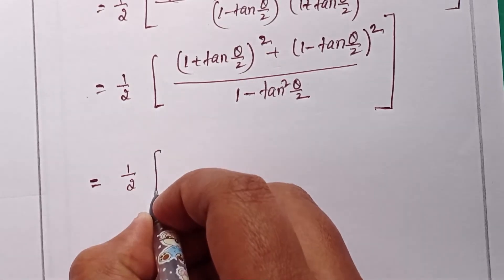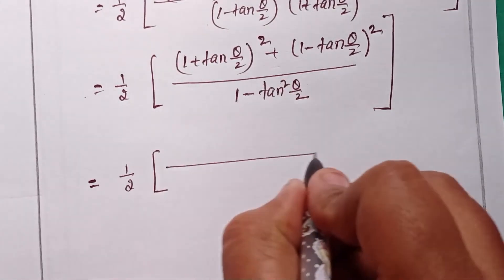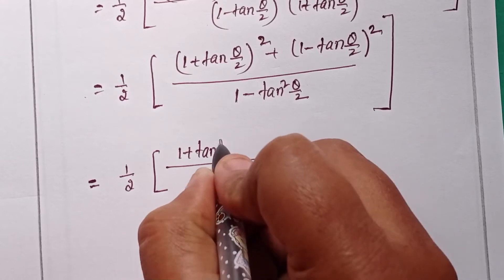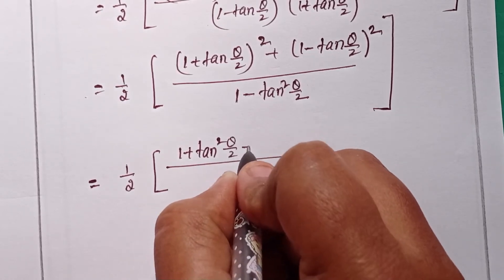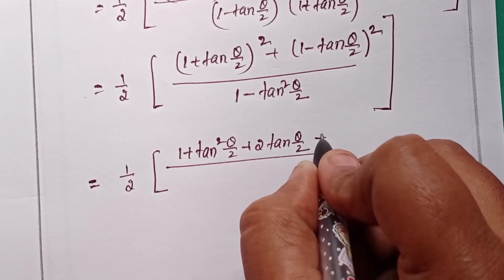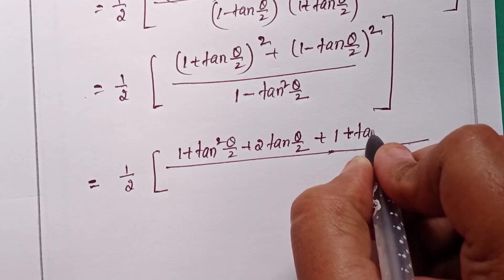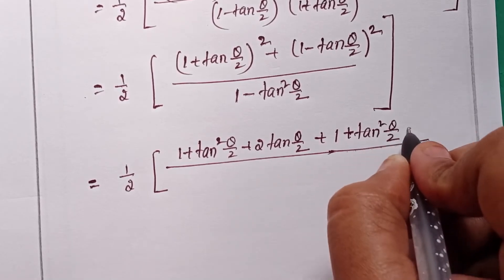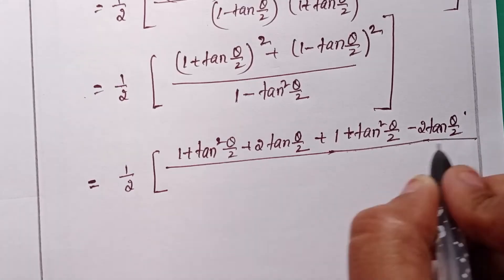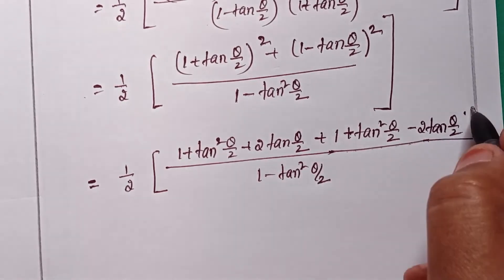Using the (a + b)² = a² + b² + 2ab formula and the (a − b)² = a² + b² − 2ab formula, we expand the numerator. This gives: 1 + tan²(θ/2) + 2tan(θ/2) plus 1 + tan²(θ/2) − 2tan(θ/2), all over 1 − tan²(θ/2).